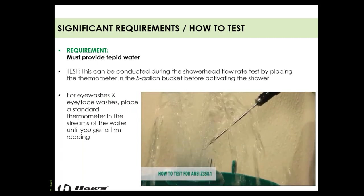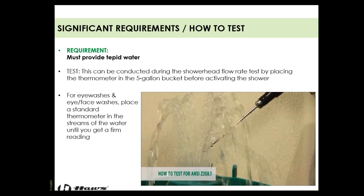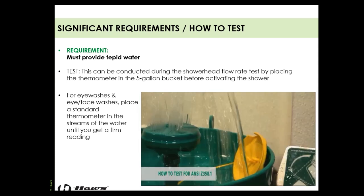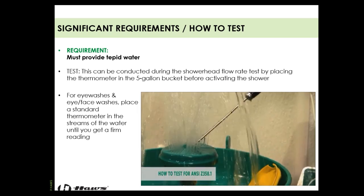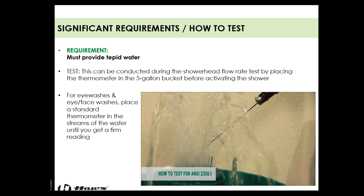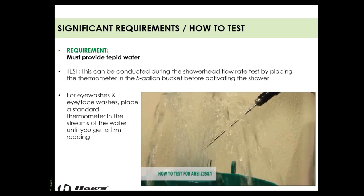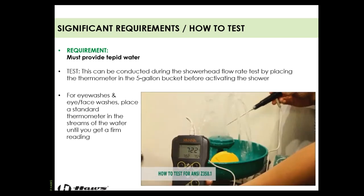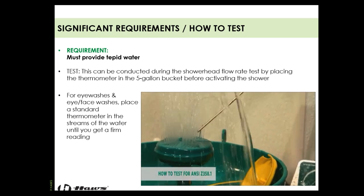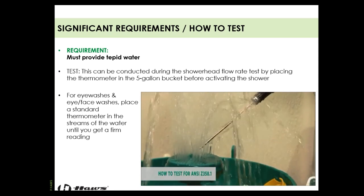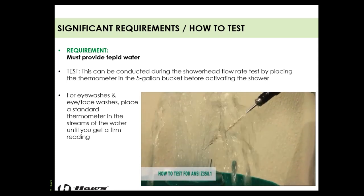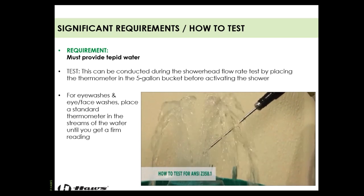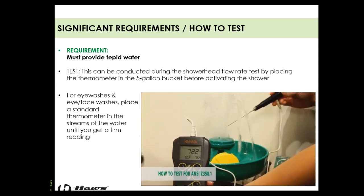To test temperature, throw the thermometer in the bottom of the five-gallon bucket before testing the shower — you can gather temperature data simultaneously during the weekly activation test. For an eyewash or eye face wash only, place the thermometer in the bowl of the device and measure from there. When testing the shower with the bucket, you get it all done in one shot.